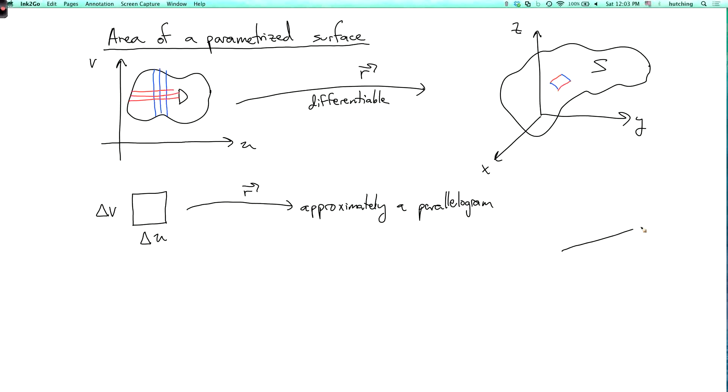Then what we get is approximately a parallelogram. And what are the edge vectors of this parallelogram? Well, one edge vector comes from the horizontal side here. So we're moving in the u direction by delta u. And then the amount that we move in the image is the partial derivative of r with respect to u times delta u. So this is delta u times the vector r_u.